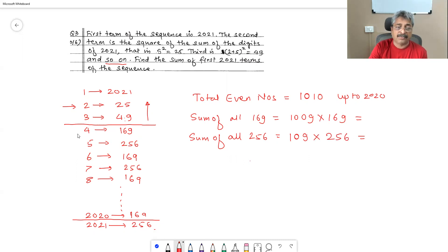So this is sum total of term number 4 to term number 2021. We are done with these two additions. We will take care of this. And then you have to add this quantity, the first three terms.